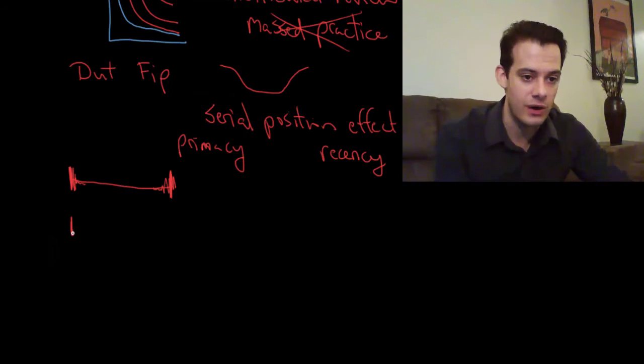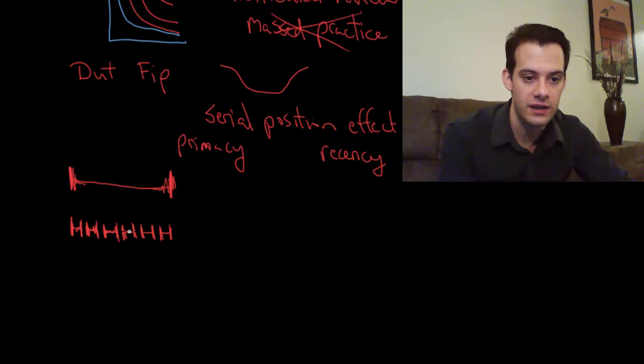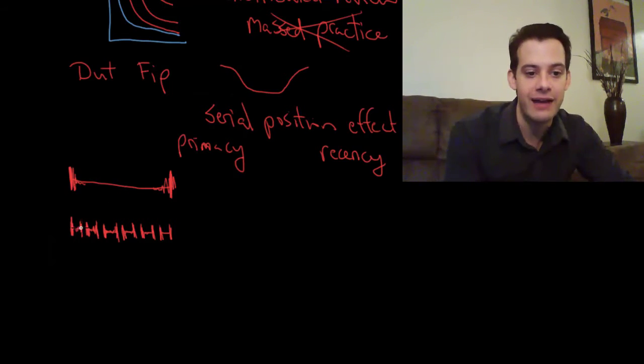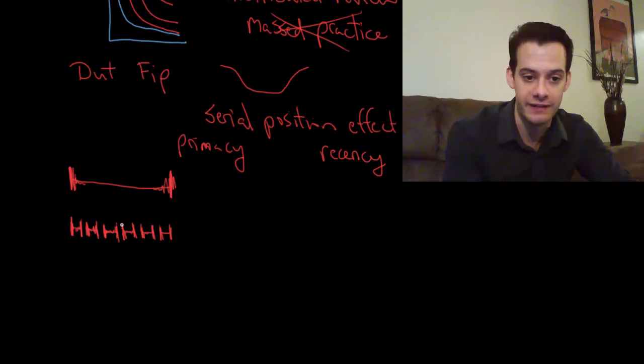Now if we take that same two-hour period but break it up into a number of shorter study sessions, not only do we get this distributed review where we're reviewing the information many times over, but we also have this additional primacy and recency effect at the beginning and end of each of these little sessions. This means we have less information that's sitting in the middle, this area where recall is probably going to be the lowest, and we have more of these beginnings and endings and those are hopefully going to improve our recall of the information.